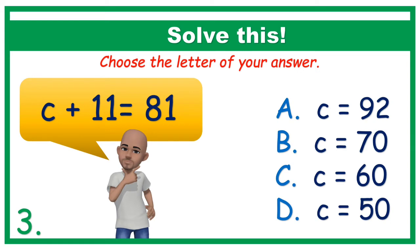Number 3. C plus 11 equals 81. A, C equals 92. Choose the letter of your answer.